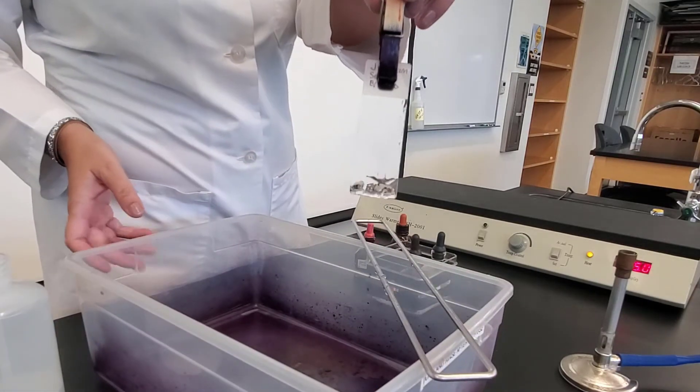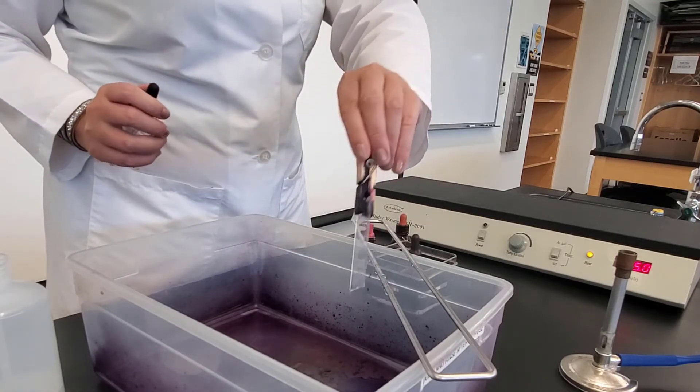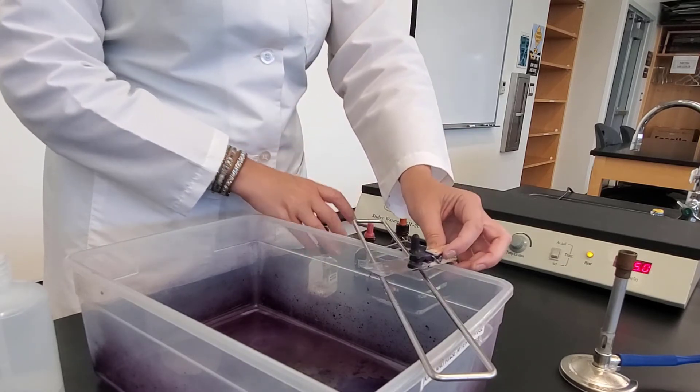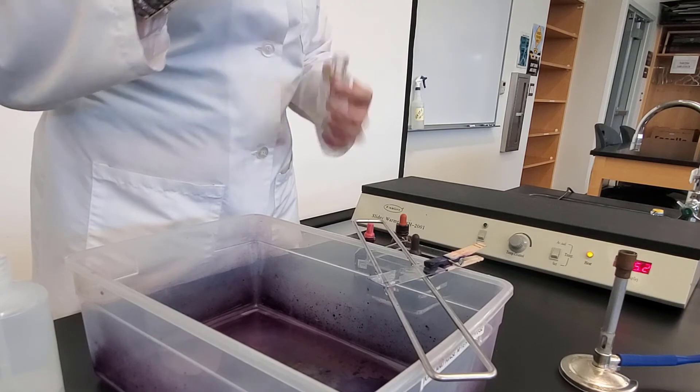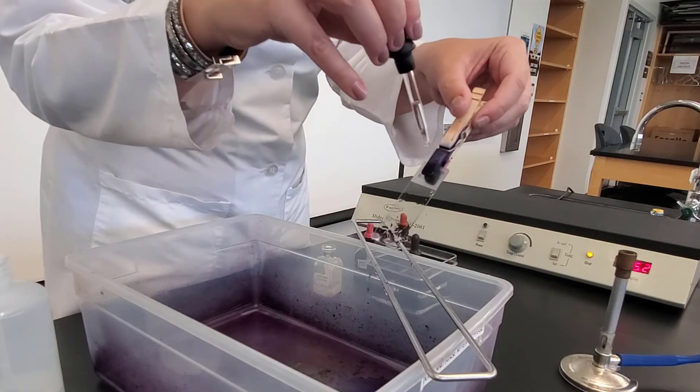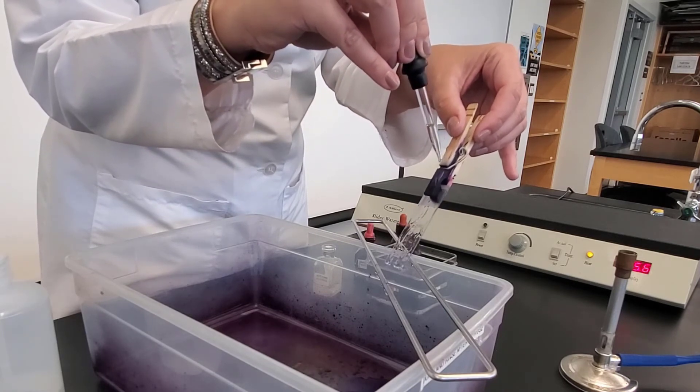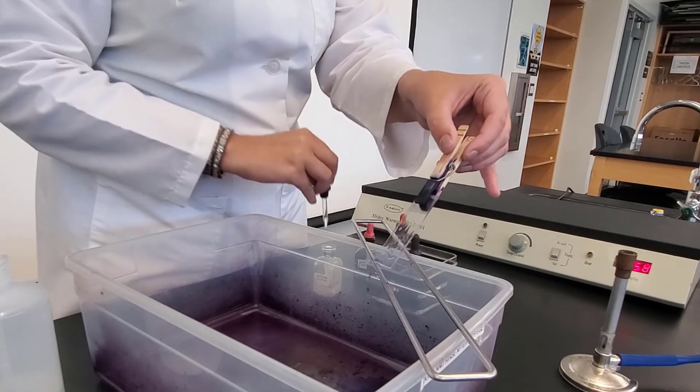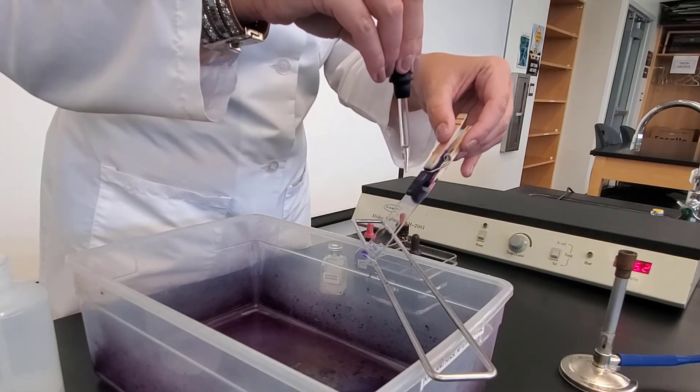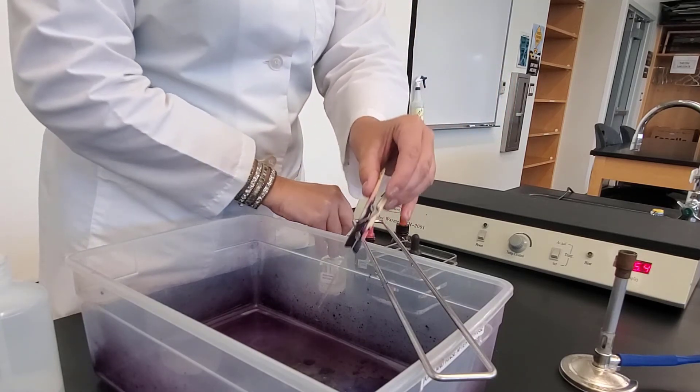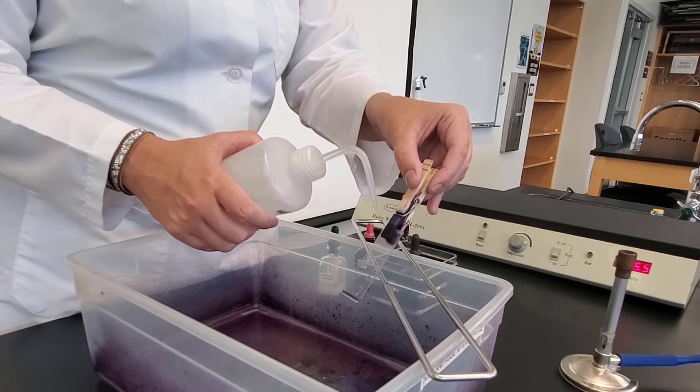Now, the next part of this is going to be the decolorization step. This is the most important step of the whole procedure. So what I want to do in this step, let me shake off the extra water, is that I want to add the decolorizer until the liquid coming off is clear. So I'm just going to add it. And as I do that, I see that the liquid coming off has some color to it. Shake off the excess. And then my liquid coming off is clear, so I'm going to stop. So once my liquid coming off is clear, I'm going to then rinse with water again.